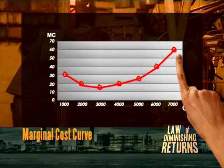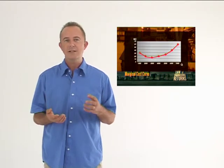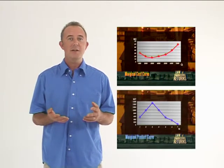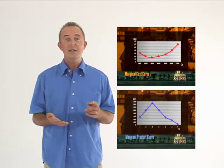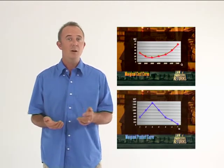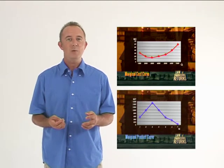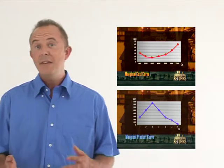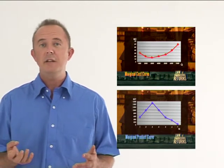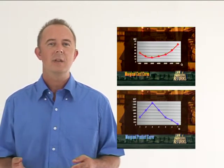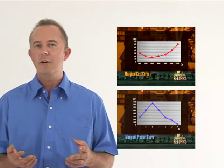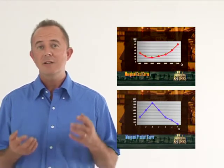Assuming a given price for the product and a given wage for labour, we can now establish the relationship between the two curves and explain the shape of the marginal cost curve. Assuming we pay all the workers the same wage, an increase in the marginal product of labour implies that for the additional money we spend to employ this additional worker, we get a greater output for the money spent. This means that the cost of producing the additional unit decreases. As the marginal product of labour goes up, the marginal cost decreases.